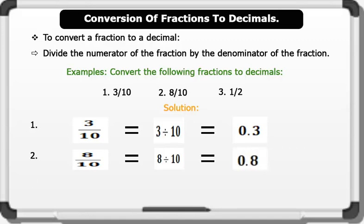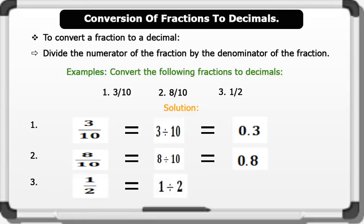3. 1 over 2 equals 1 divided by 2. This gives us 0.5. That's brilliant.